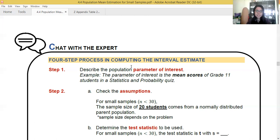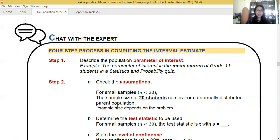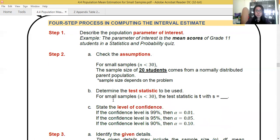For small samples, again, when do we say the sample is small? When it's below 30. But for 30 and above, that's for large samples. So if the sample size is small, we say the assumption this way. The sample size of 20 students comes from a normally distributed parent population.